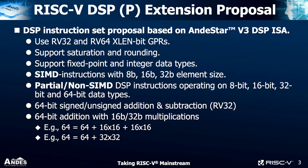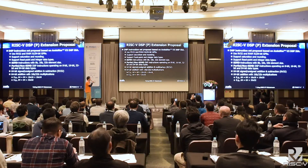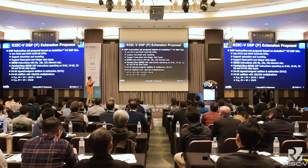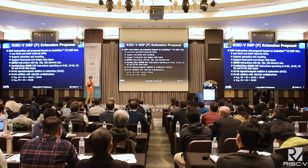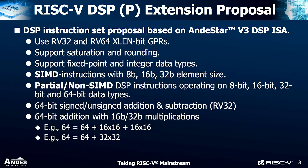Let me briefly talk about the features of the P-extension proposal. The proposal is based on the NDSTAR V3 DSP ISA and it uses RV32 and RV64 XLEN GPRs. Currently we have the library defined for these two architectures. It supports saturation and rounding, and it supports fixed-point and integer data types. The SIMD instructions also support 8-bit, 16-bit, and 32-bit element sizes. We also have some non-SIMD instructions operating on 8-bit to 64-bit data types.